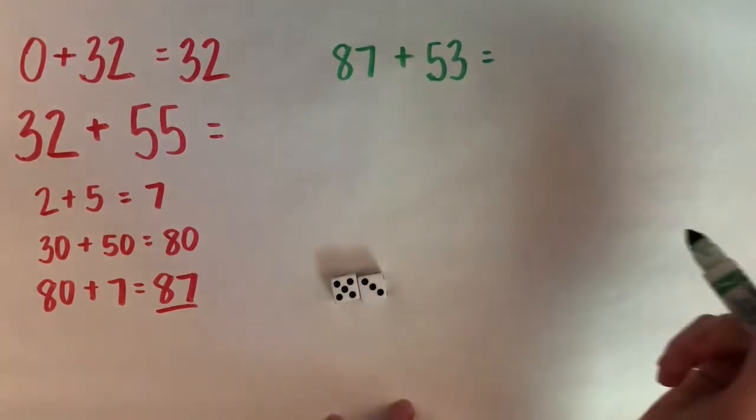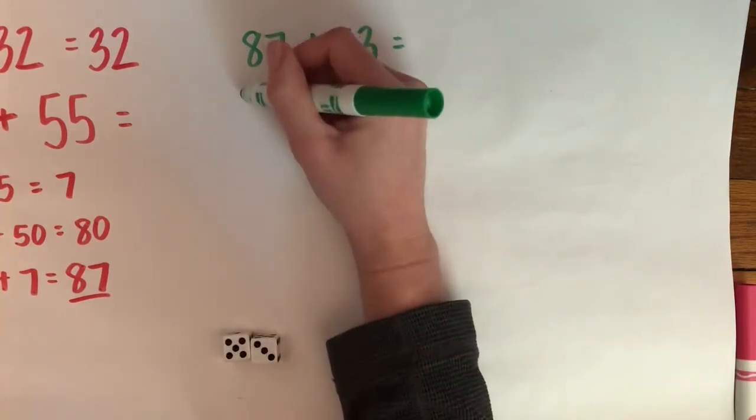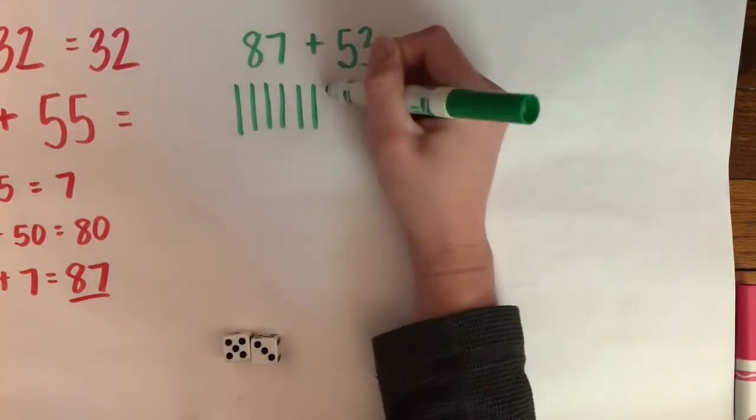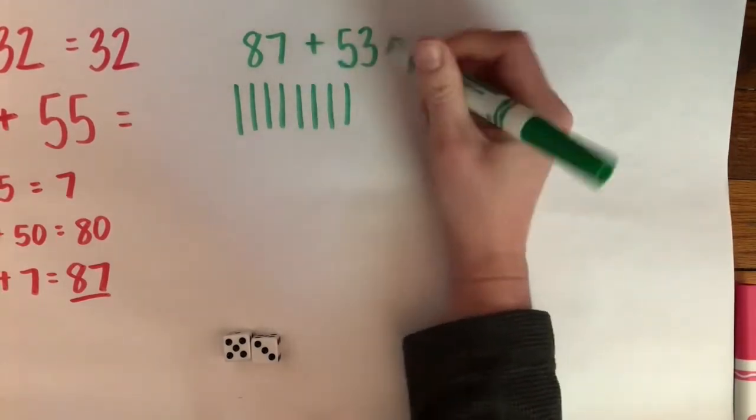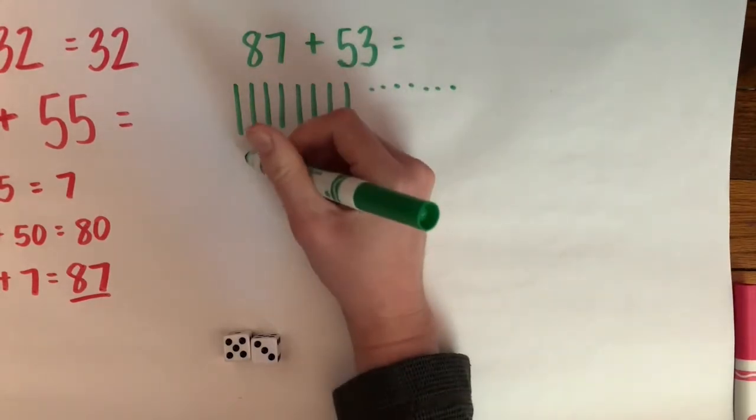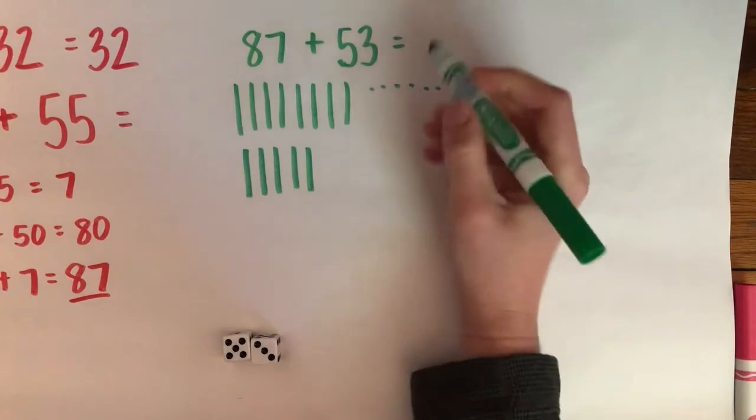This time I'm going to use base 10 blocks. I know that I have 8 tens in 87 and I have 7 ones. And then I know that I have 5 tens in 53 and 3 ones.